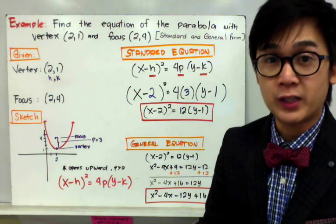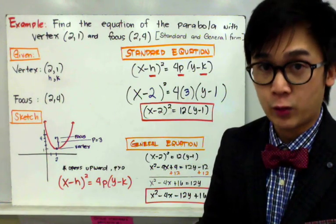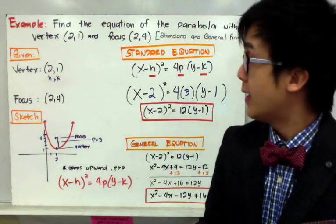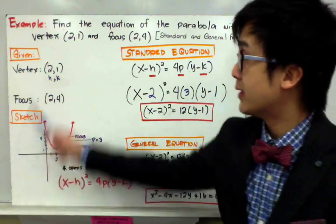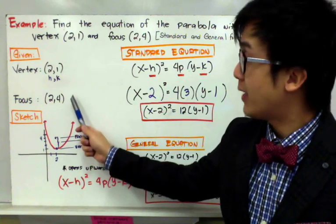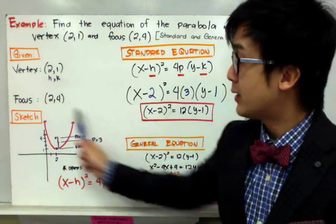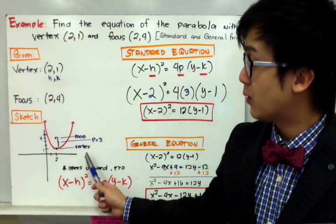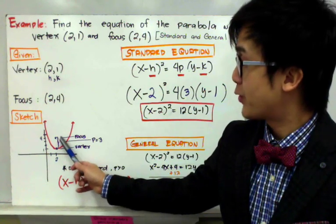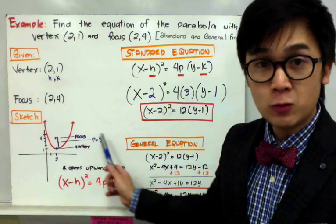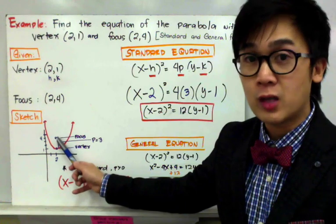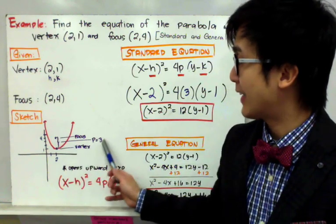This time we need to write two equations: the standard equation and the general equation. We have the vertex and the focus, similar to example one, but the vertex is no longer at the origin. The first step is to organize the given parts and sketch the graph. The vertex is at (2, 1) and the focus is at (2, 4). The p value is the number of units from the vertex to the focus, which equals 3.